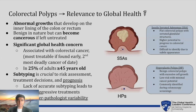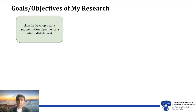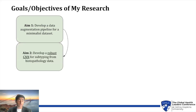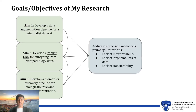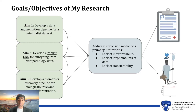My research had three main objectives: first, to develop a data augmentation pipeline for optimal use of a small dataset; second, to establish a robust convolutional neural network model, a type of deep learning model, for accurate histopathology-based subtyping; and third, to devise a biomarker discovery pipeline for interpretable and biologically relevant differentiation of these subtypes. By addressing these objectives, my work aims to address key limitations in precision medicine such as transferability, interpretability, and data accessibility, with the ultimate goal of enhancing treatment decisions and improving patient outcomes globally.